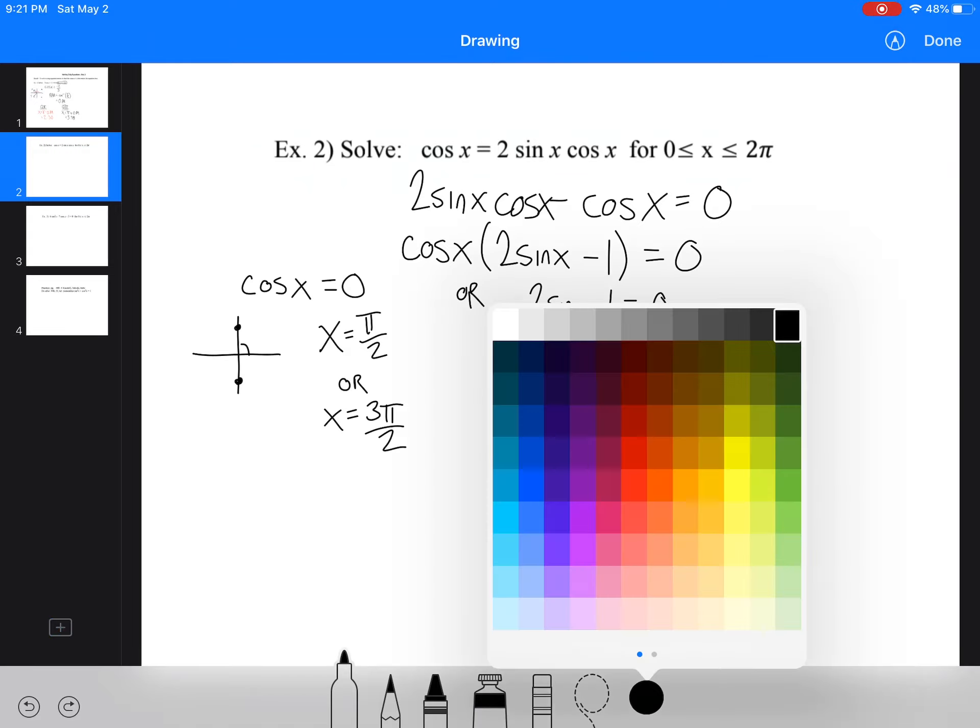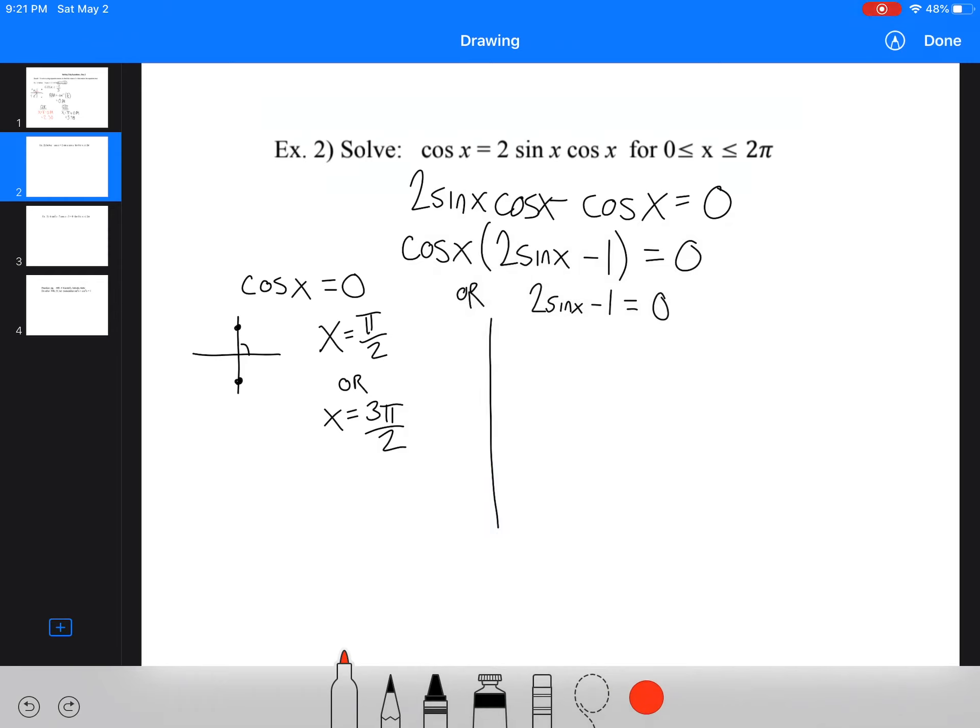Now, if I said sin x, just for argument's sake, I'm going to show you. If I said sin x equals 0, that happens when y is equal to 0, the y values. So sin x equals 0. That happens when x is equal to 0, when it's equal to pi, or when it's equal to 2 pi. There's actually three solutions for that one.